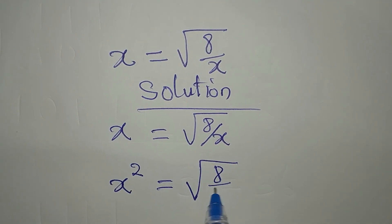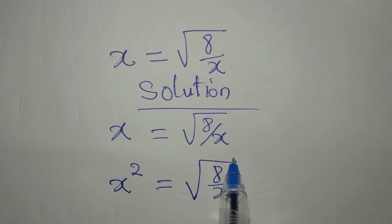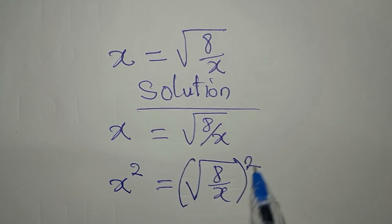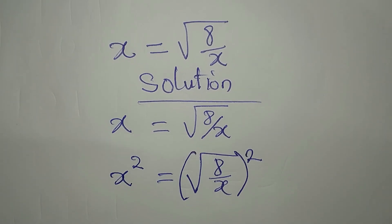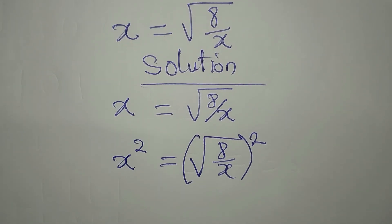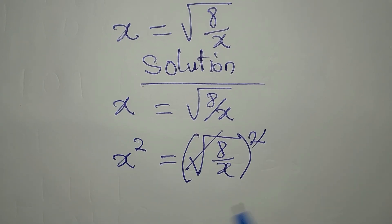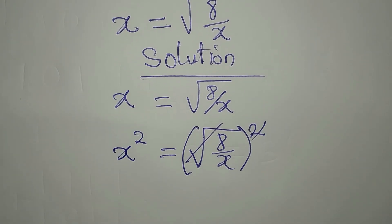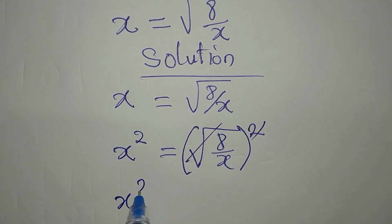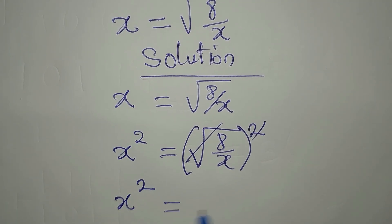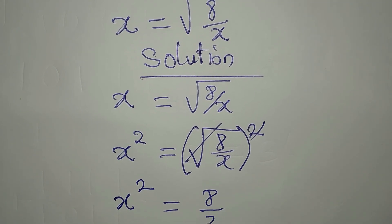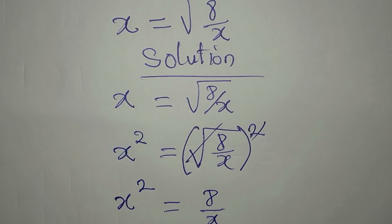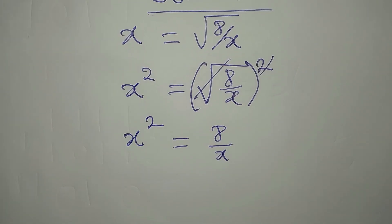We have the square root of 8 over x, and this will be squared so that the root is removed. We then have x squared equal to 8 over x. From here, we cross multiply.